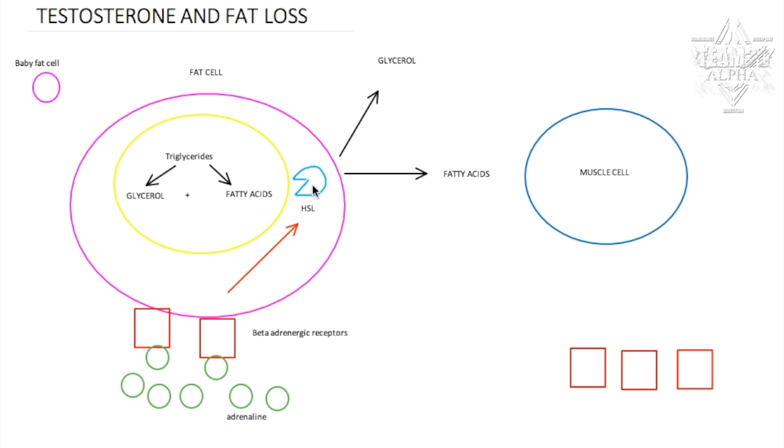Now remember, in the body one thing has to be activated by another. Hormone sensitive lipase has to be activated by a bunch of enzymes. Here you have cAMP, PKA, things like that. And those molecules must also be activated by adrenaline. So the more adrenaline receptors you have, the beta adrenergic receptors, the faster this process is going to go. That's what testosterone does, it increases these receptors and allows you to lose fat a lot quicker.